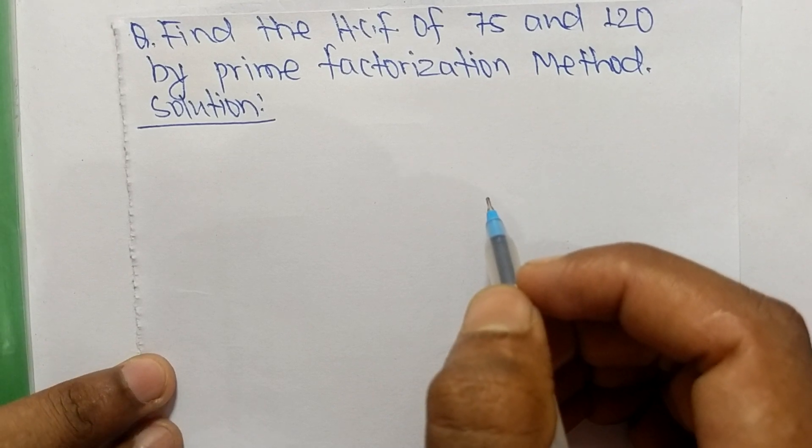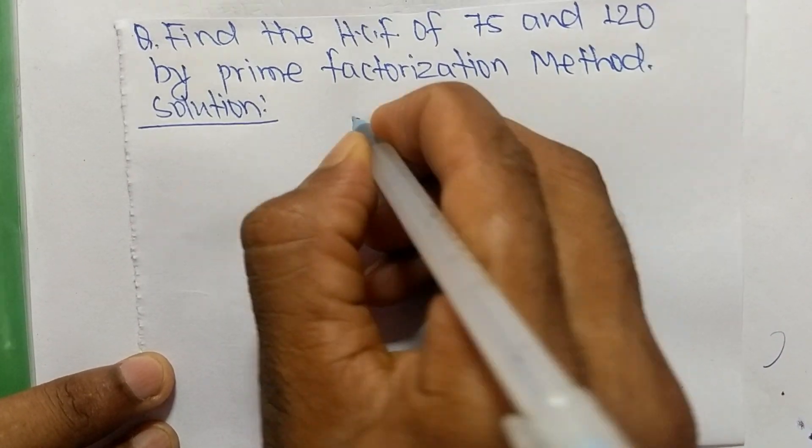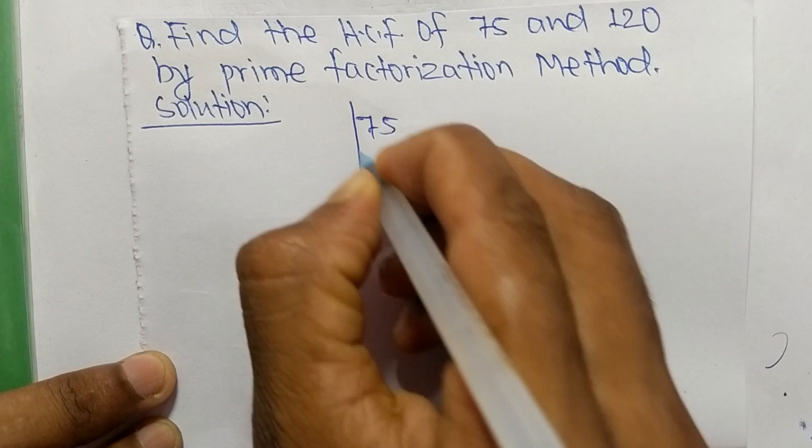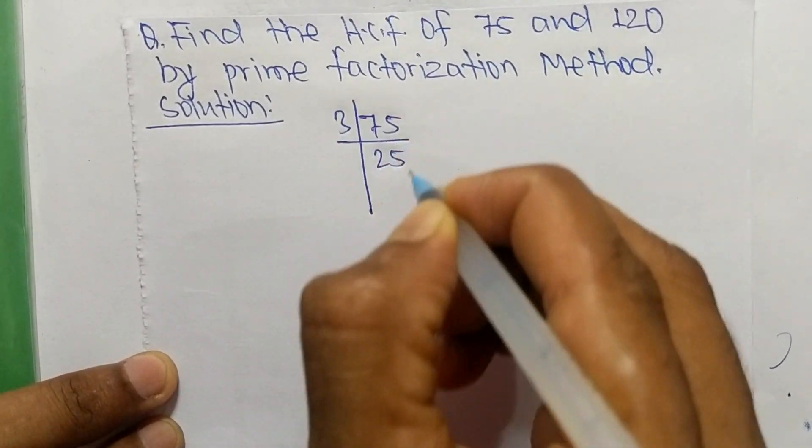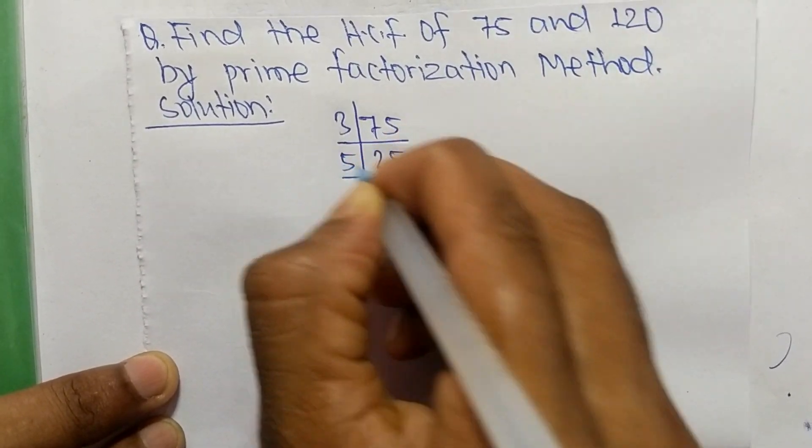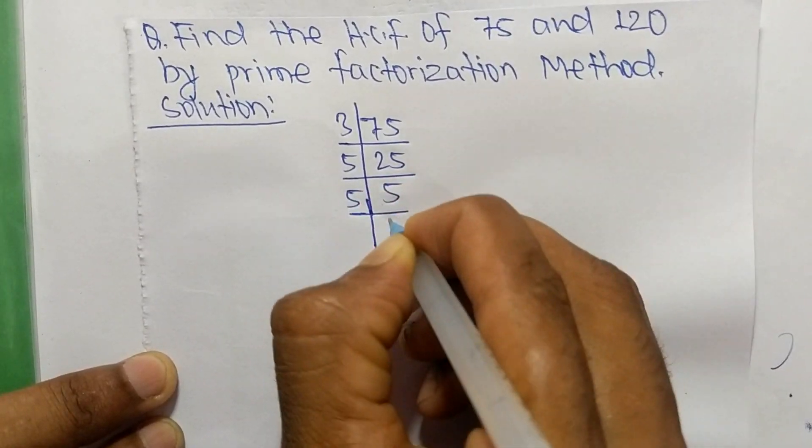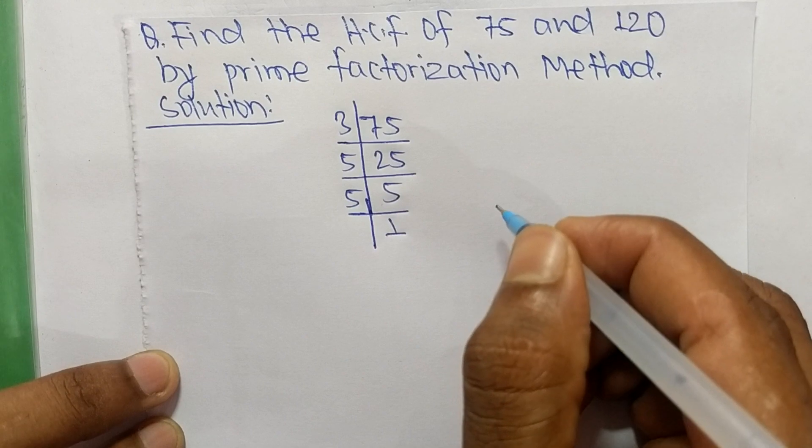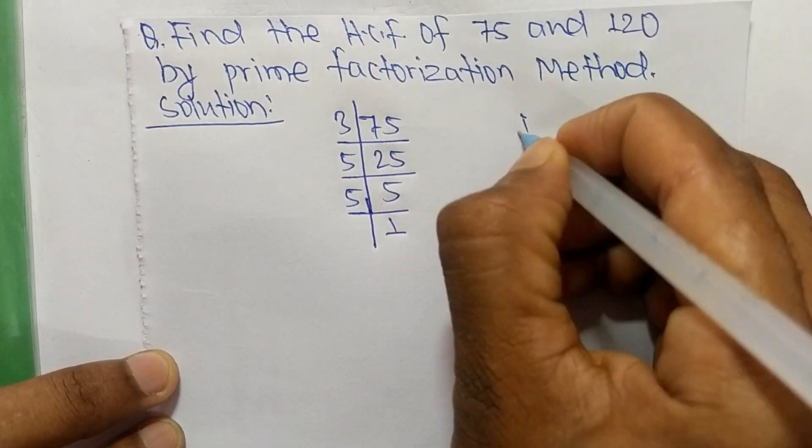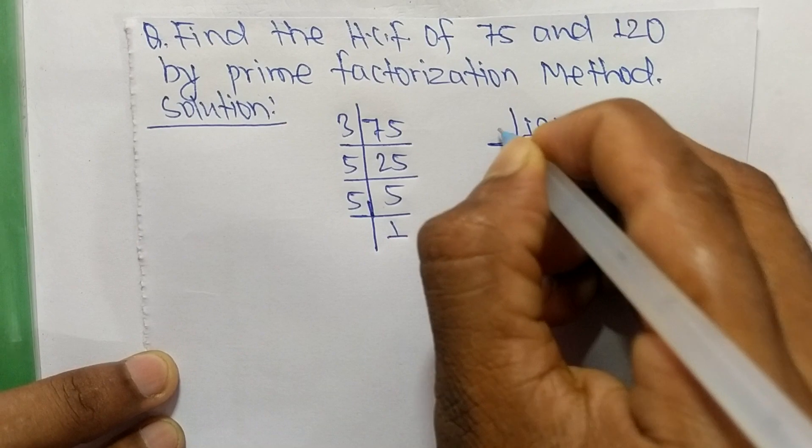First, we find out the prime factors of 75. So it is 3 times 25 equals 75, 5 times 5 equals 25, and 5 times 1 equals 5. Like this, the prime factors of 120 are: